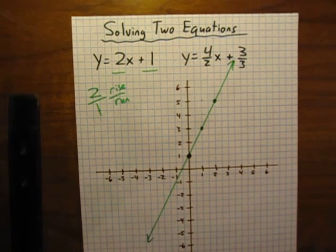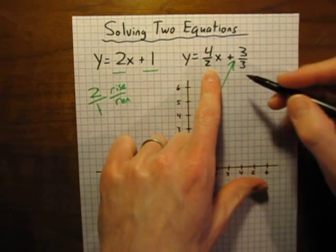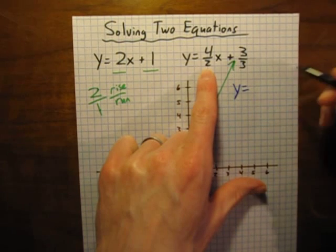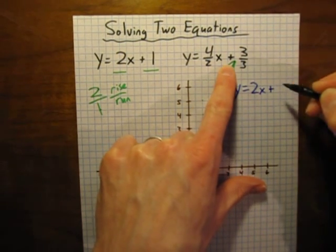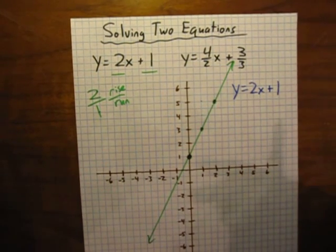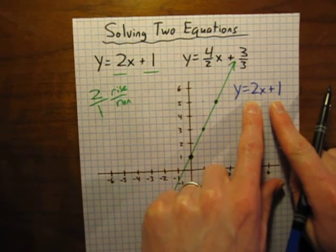Alright, let's graph the next one. First thing we notice is you've got some fractions in this equation. Let's simplify those a little bit. So, we'll rewrite the equation. y is equal to 4 divided by 2, of course, is 2. And 3 divided by 3 is a pretty easy fraction. 3 divided by 3 equals 1. And so, now our new equation is y is equal to 2x plus 1.